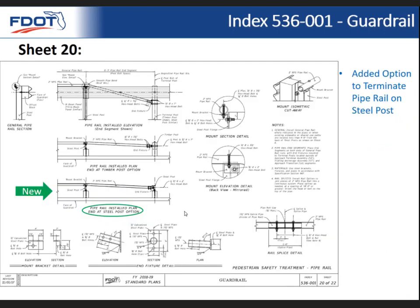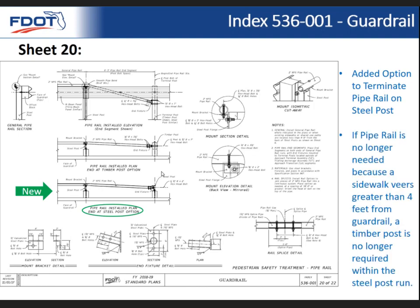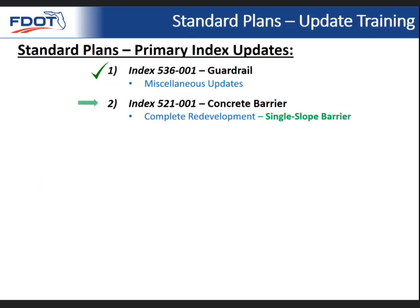We've added the ability to terminate the pipe rail on a steel post. The purpose of the pipe rail is to provide some degree of protection for pedestrians and bicyclists when a sidewalk or shared use path is within four feet of the back of a steel post, because there could be sharp edges on the steel flanges. In urban areas you would typically end with a timber post approach terminal and not need the pipe rail. But it could be a case where the sidewalk comes near the guardrail post and then veers away — so we've added this new option to terminate on a steel post without having to put in a timber post approach. Now designers have both options.